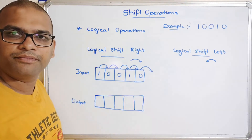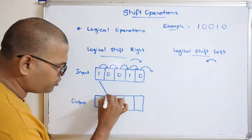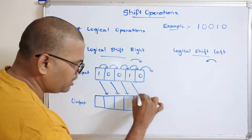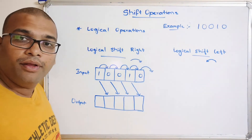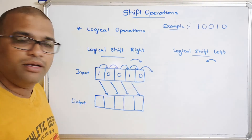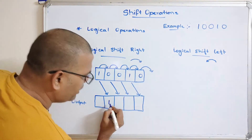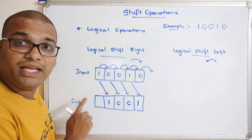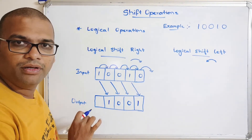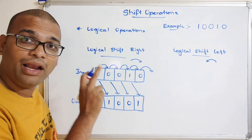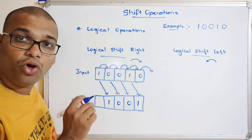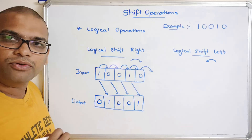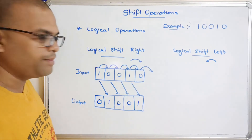So after the logical shift right, the bits 1, 0, 0, 1 are stored in positions two through five. The MSB position will be filled with 0, because in a logical shift right operation, you simply place 0 at the MSB. So the output is 0, 1, 0, 0, 1.